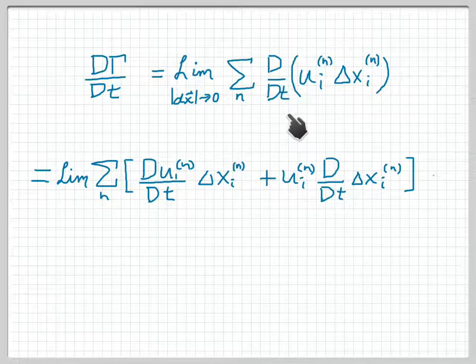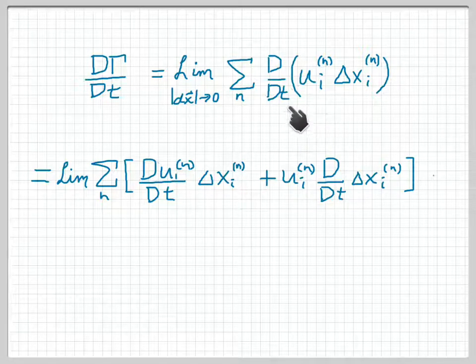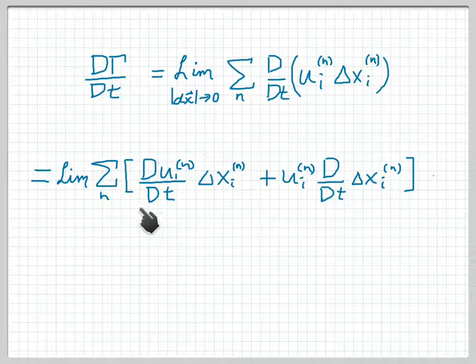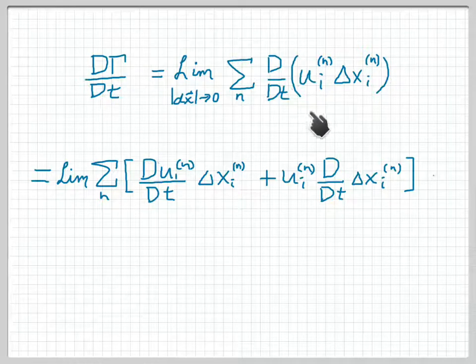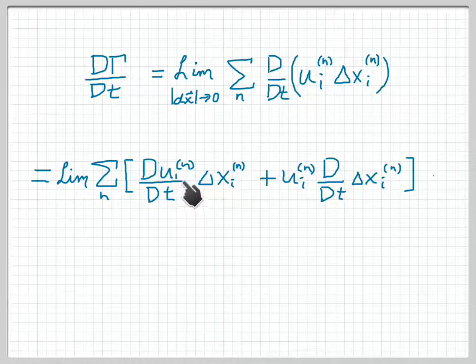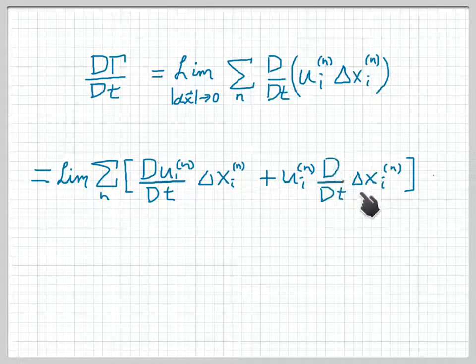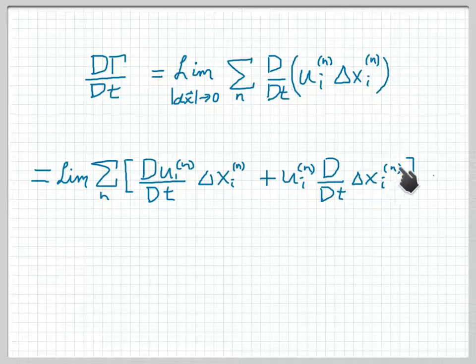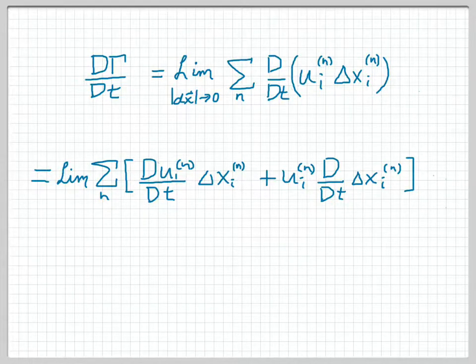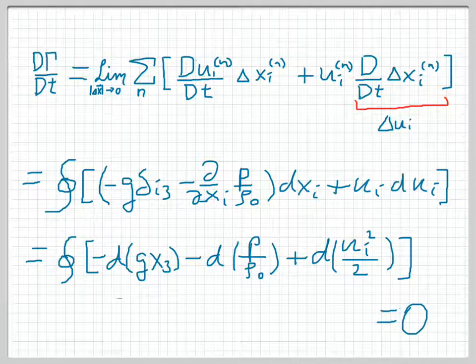Now we can carry out this differentiation of each of these terms, so we get the limit of the sum, and then by the product rule, we first have the material derivative of ui⁽ⁿ⁾ times Δxi⁽ⁿ⁾, and then plus ui⁽ⁿ⁾, material derivative of Δxi⁽ⁿ⁾. So that's just application of the standard product rule.